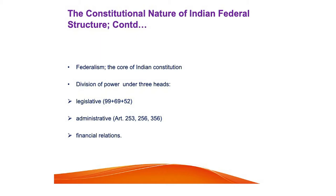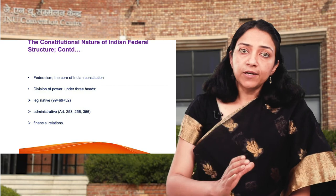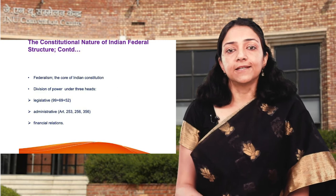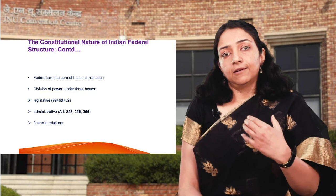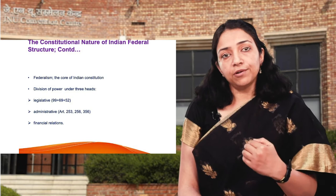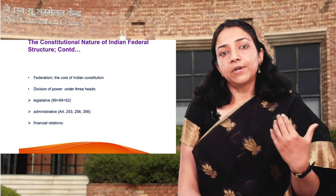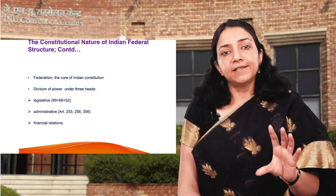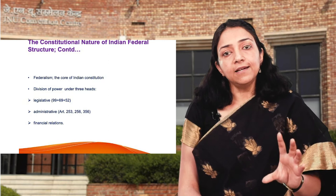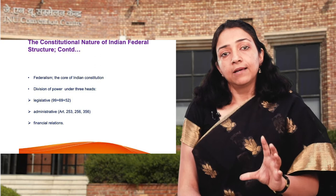If we look at the constitutional structure, federalism is a core point of the Indian Constitution. In any federal system, it is important to understand the division of power between centre and state, as the power-sharing formula decides the nature of their relation. In the 7th Schedule of the Indian Constitution, there is a legislative power division: the Union List has 99 subjects, the State List has 69 subjects, and the Concurrent List has 52 subjects.